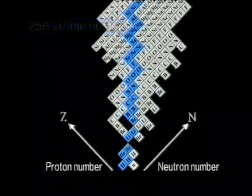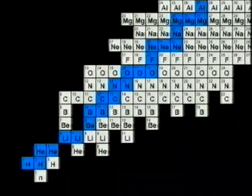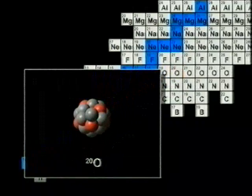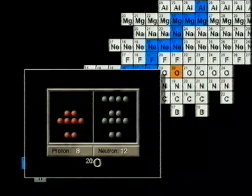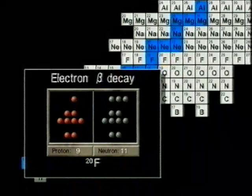Nuclei other than these 256 are unstable and decay according to their own lifetimes. So, how do they decay? If there are more neutrons than protons, as is in the case of Oxygen-20, one of the neutrons emits an electron and an anti-neutrino, changes to a proton, and forms Fluorine-20. This is called electron-beta decay.